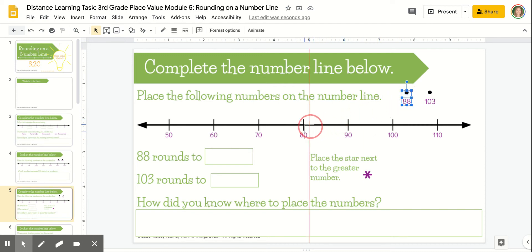I know it's going to come between 80 and 90. 88 is closer to 90 than it is to 80, so I'm going to place it right about there on the number line.